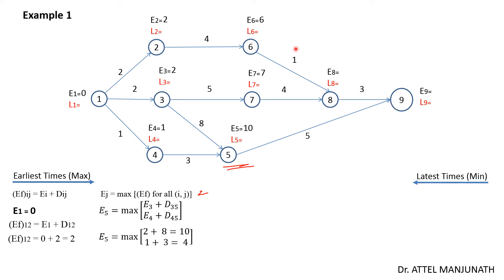For node 8, activities 6-to-8 and 7-to-8 merge: 6 plus 1 is 7, and 7 plus 4 is 11. Maximum is 11, so write 11 for event 8. For node 9, activities 8-to-9 and 5-to-9 merge: 5-to-9 gives 10 plus 5 equals 15, and 8-to-9 gives 11 plus 3 equals 14. Maximum is 15 — write 15 for event 9. Forward pass is now complete.